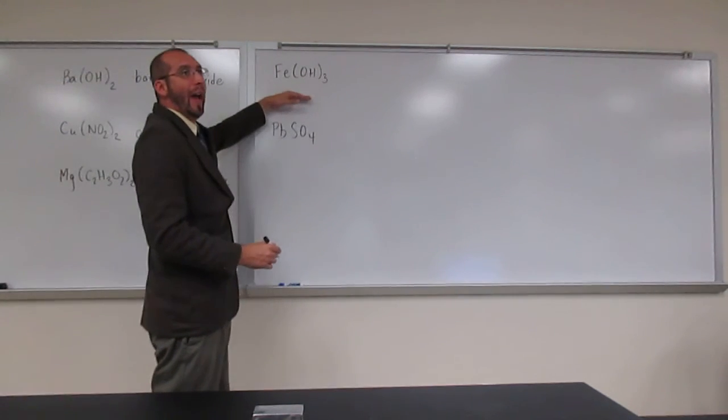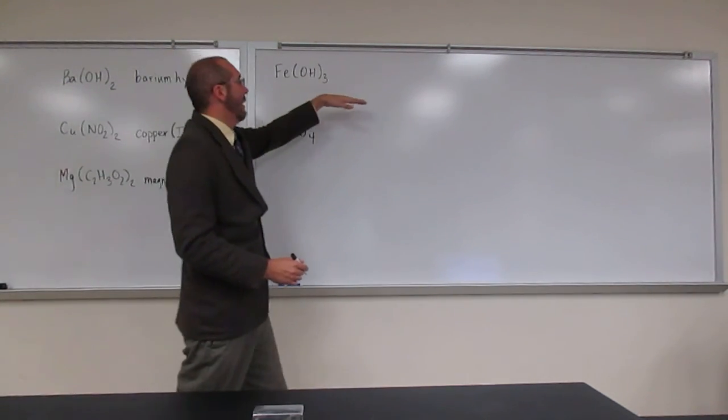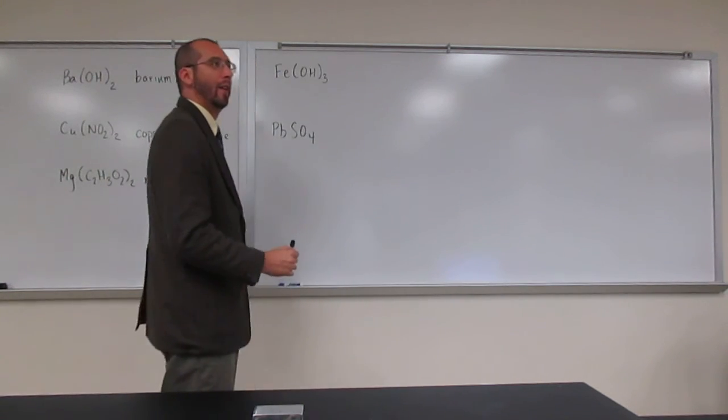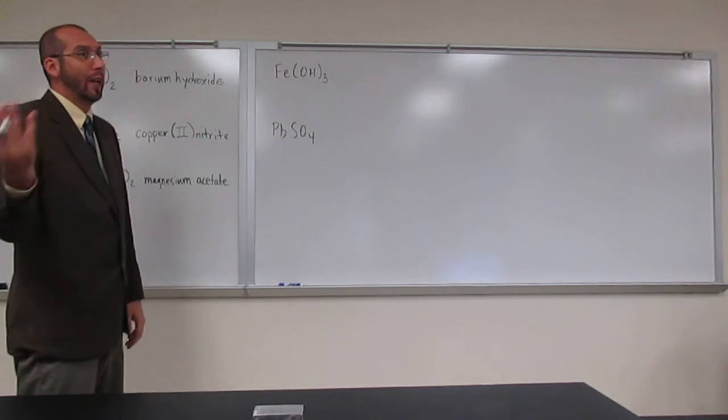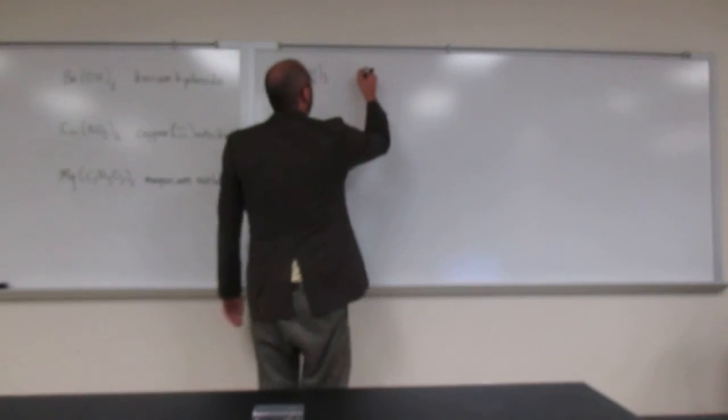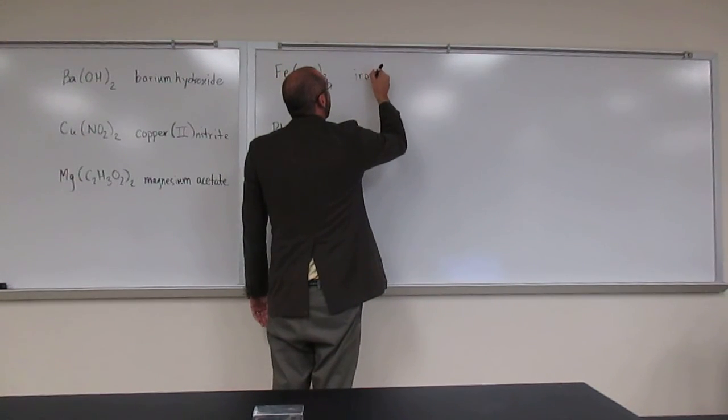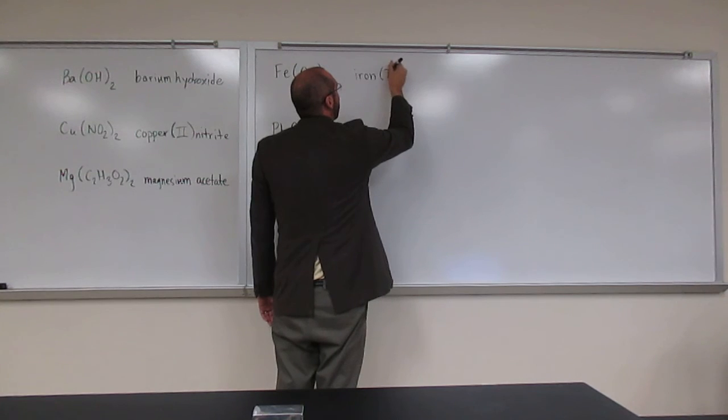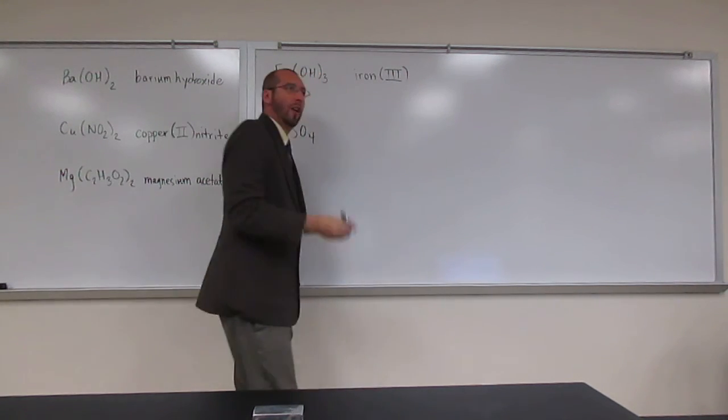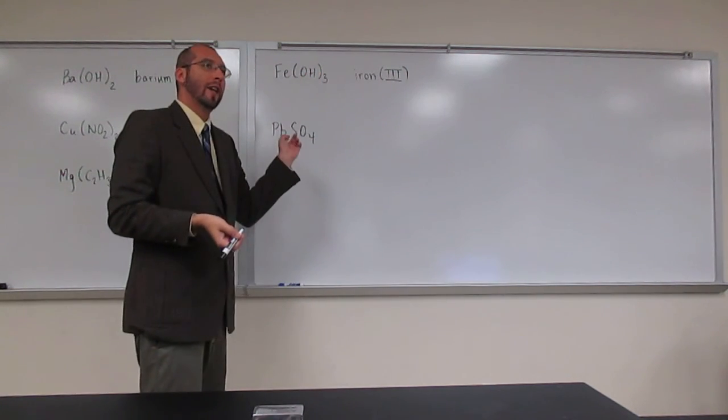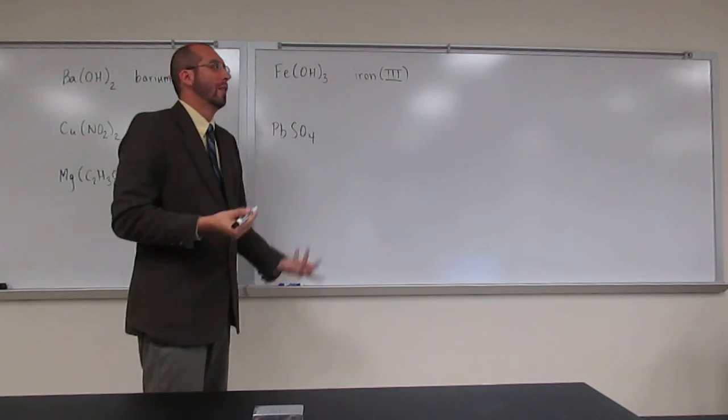Since we already know half of the name of this one, why don't you guys give me the rest of it? What is it called? Iron 3 hydroxide. Okay. So why do we say iron 3? Transition metal. And hydroxide's charge is what? Negative 1.